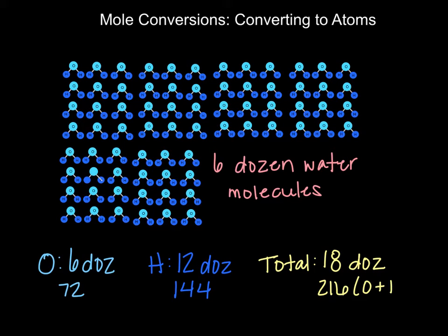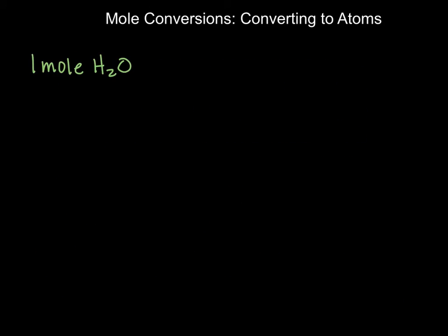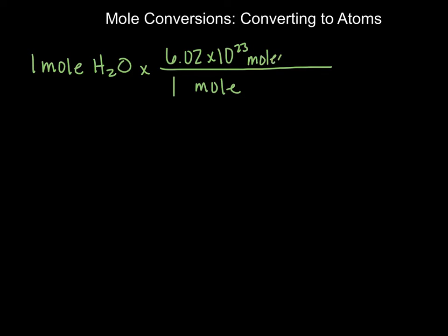Now that we've looked at this in terms of dozens, let's see if the same concept applies when we're working with moles, which is what we use much more in chemistry. If I have one mole of water and want to figure out how many molecules that is, I use my conversion factor: one mole equals 6.02 × 10²³ molecules. Doing the math, one times 6.02 × 10²³ gives me 6.02 × 10²³ molecules of water.